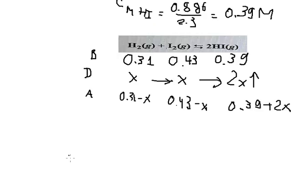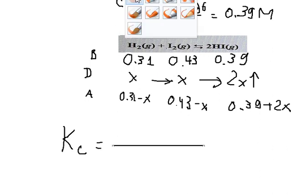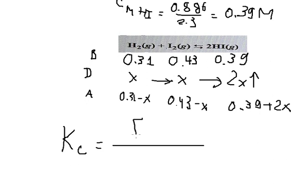Now we go to the formula of Kc here. For HI, if we look carefully, we have number 2, that means HI to the power of 2, divided by hydrogen and iodide.